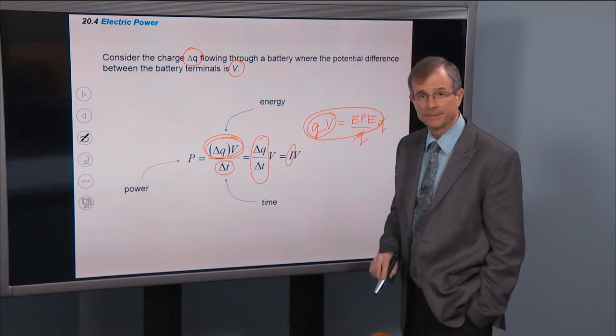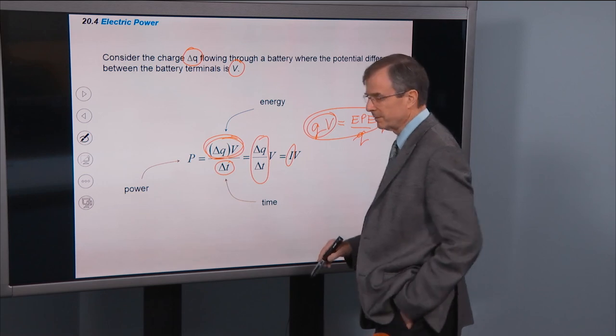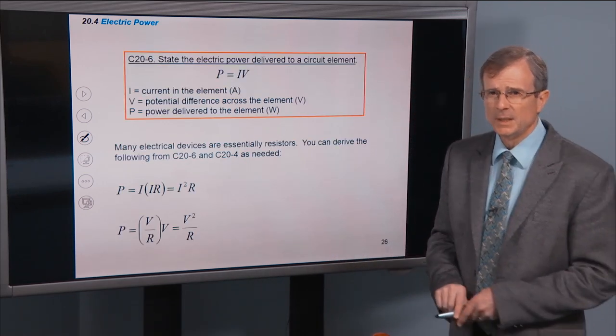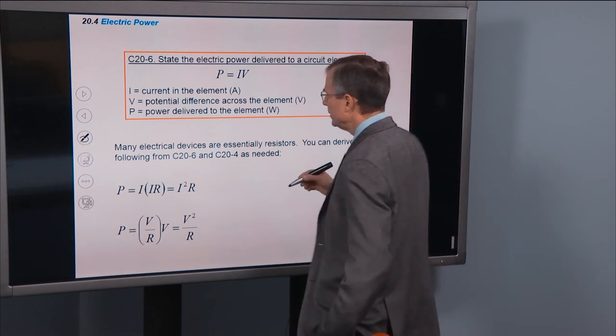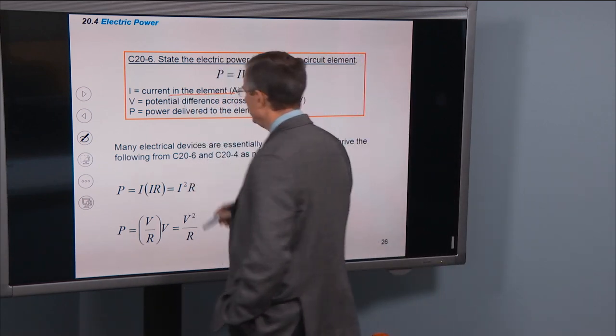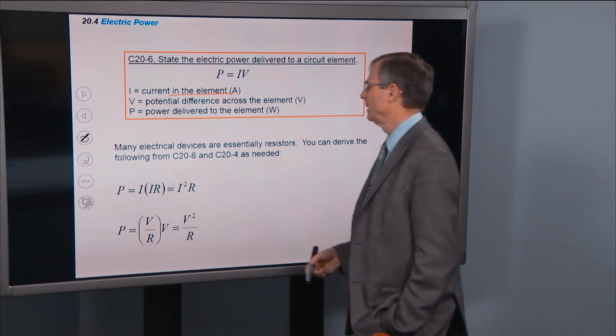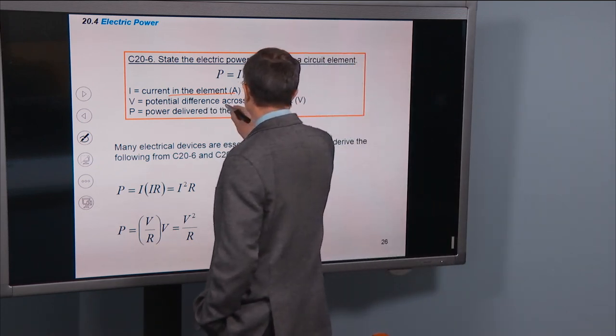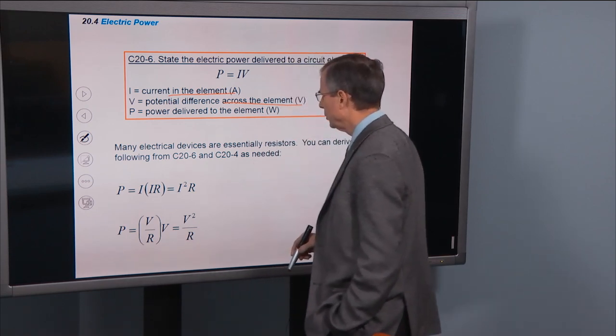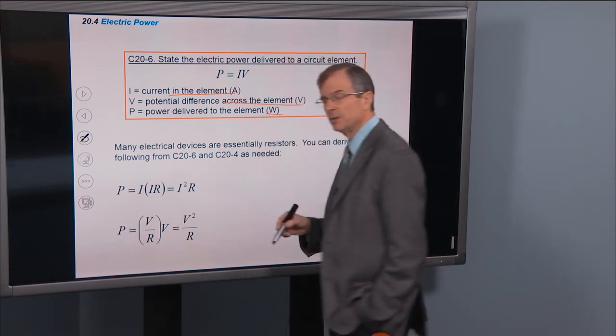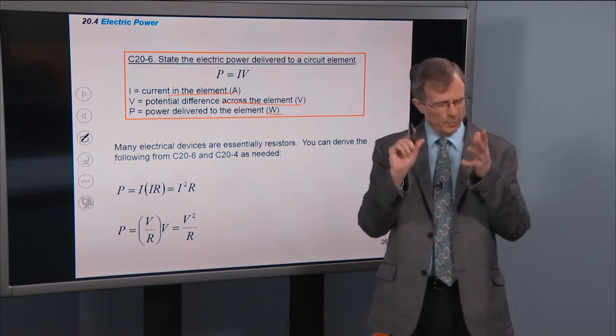And so the power delivered to a circuit element is the current through that element, current in the element or through the element like a resistor, the potential difference across the element, measured in volts, and then the power delivered to the element is measured in watts.